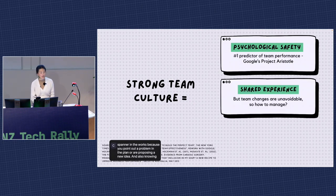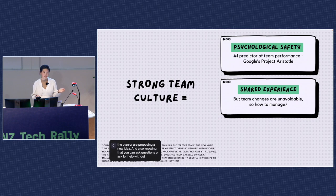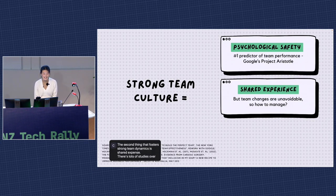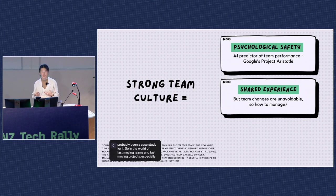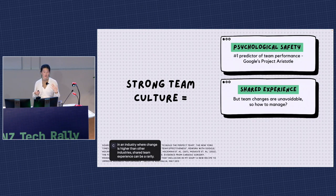The second thing that fosters strong team dynamics is shared experience. Studies in org psych over many decades show that teams that have worked together in the past perform better — for software developers, security analysts, surgeons, astronauts, basketball teams. But in the world of fast-moving teams and higher-than-average churn in our industry, shared team experience can be a rarity. Also, more recent research suggests that while team familiarity can be good for routine things, it may be less effective for tasks that require new thinking and innovation. So restructures and team changes are probably unavoidable — but how do we manage the negative impacts?